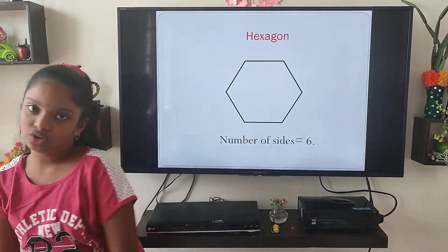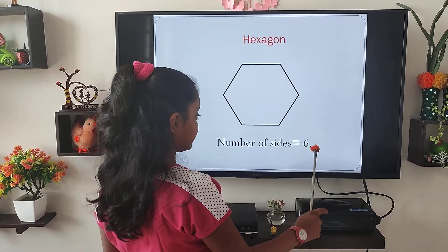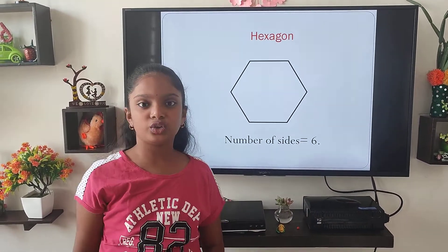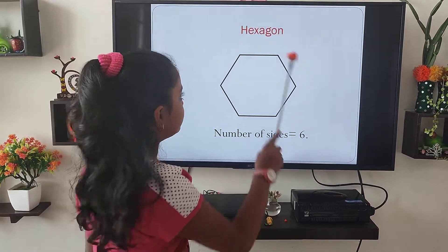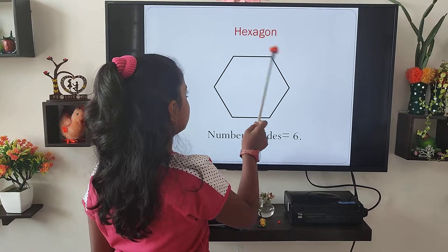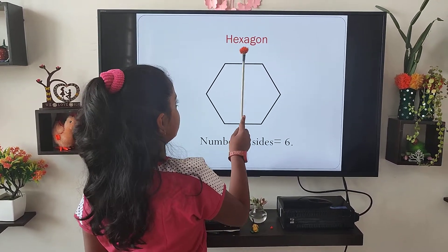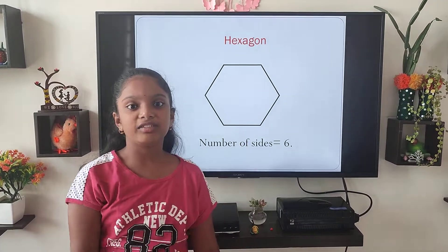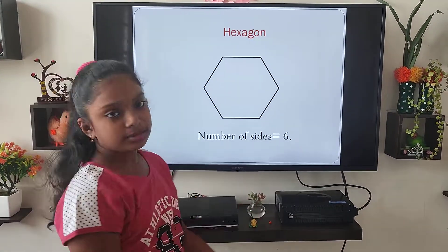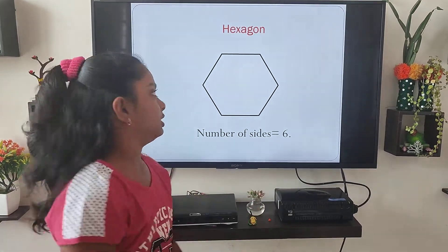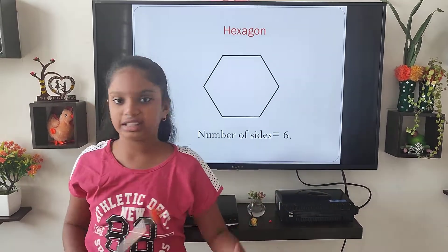Next is hexagon. The shape which has six sides is known as a hexagon. To remember this, remove the 'A' from hexagon — H-E-X-G-O-N has six letters in it, and the number of sides is also six.